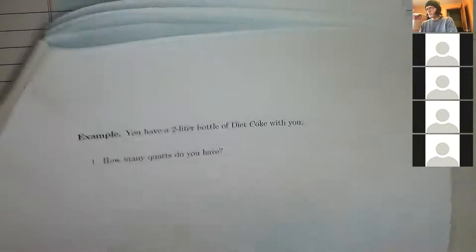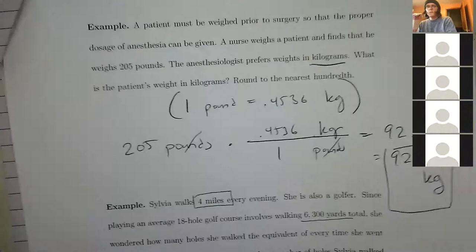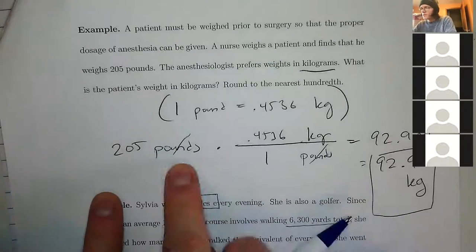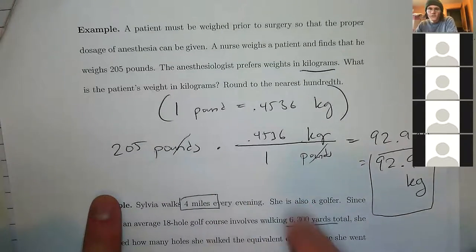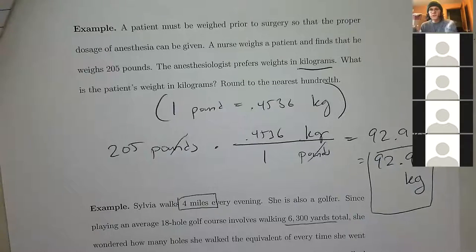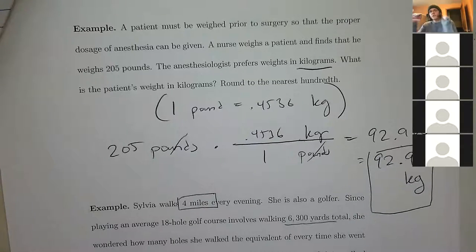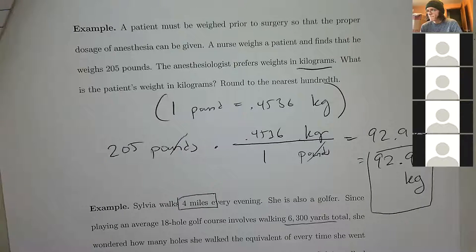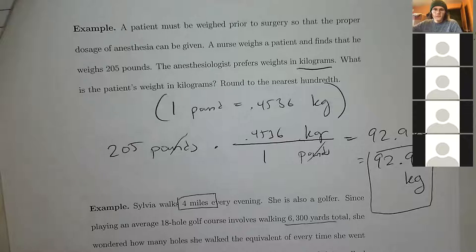Student question: 'Did you multiply or divide?' We multiplied. You have 205 pounds and you're multiplying by this fraction — when you multiply fractions, you go across the top and divide across the bottom. That's right.